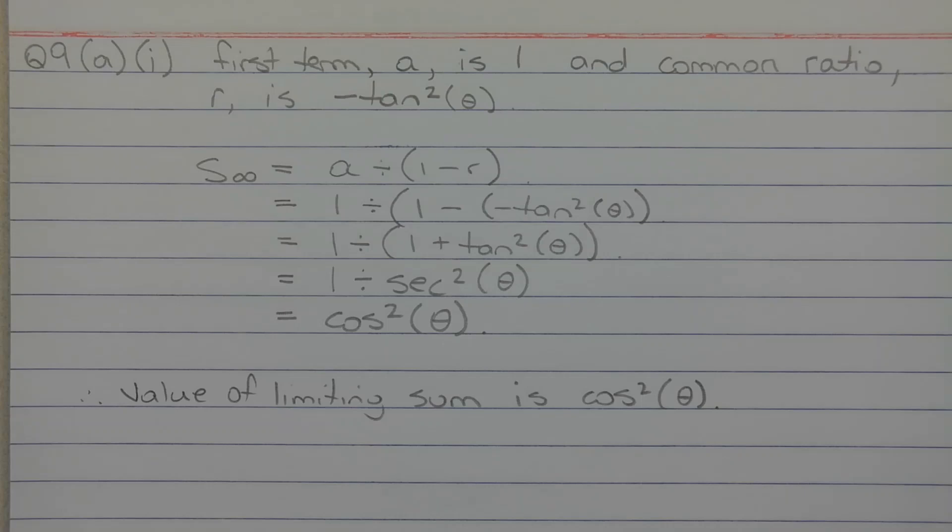So you're taking the reciprocal of the reciprocal of cos squared theta, so that cancels out and we end up with cos squared theta. Therefore the value of the limiting sum when it exists is cos squared theta.